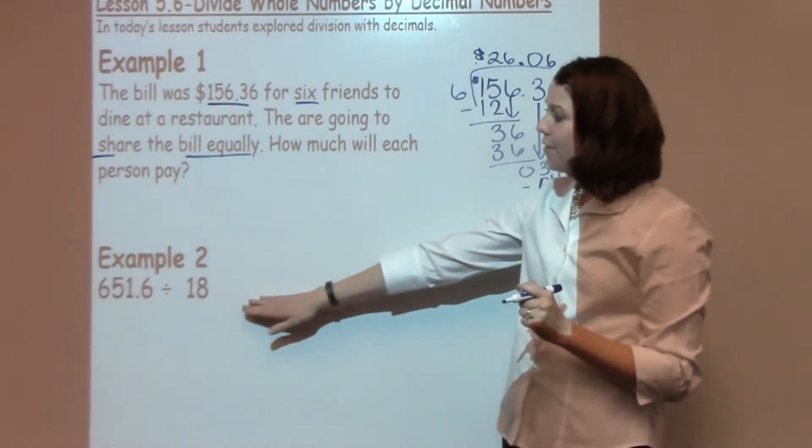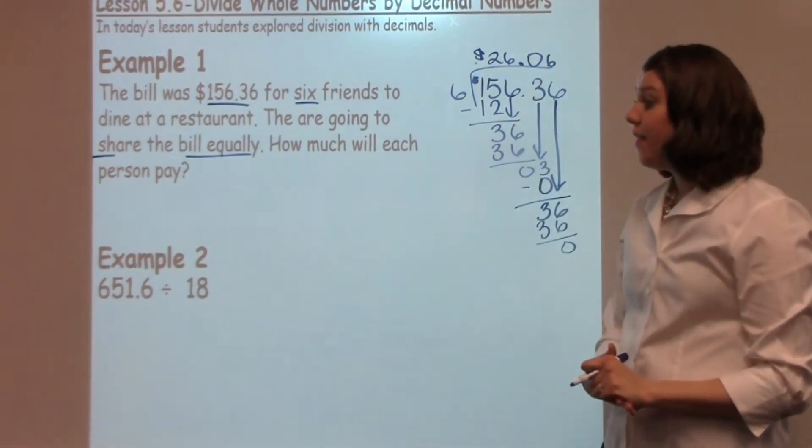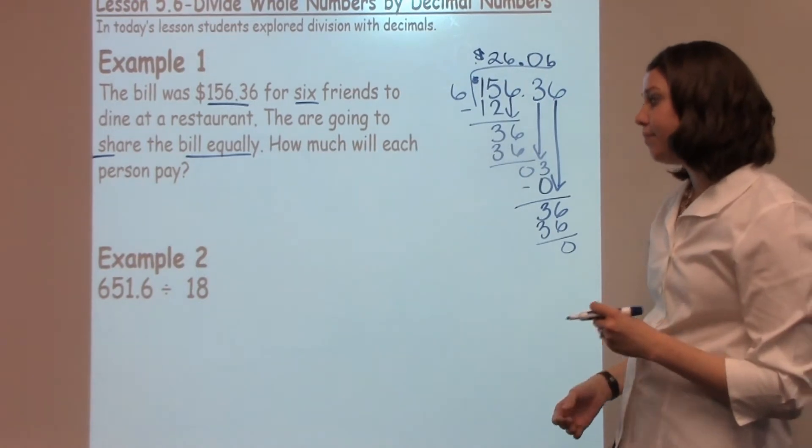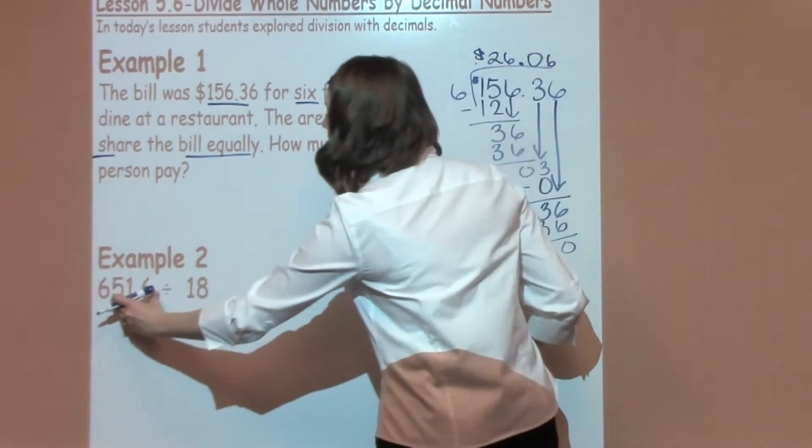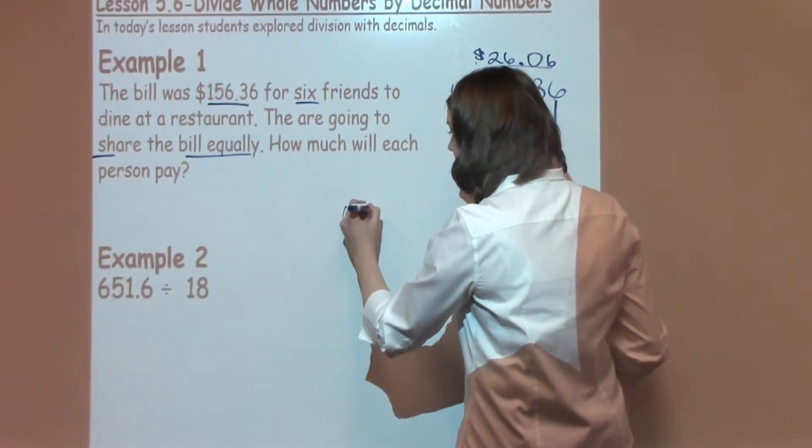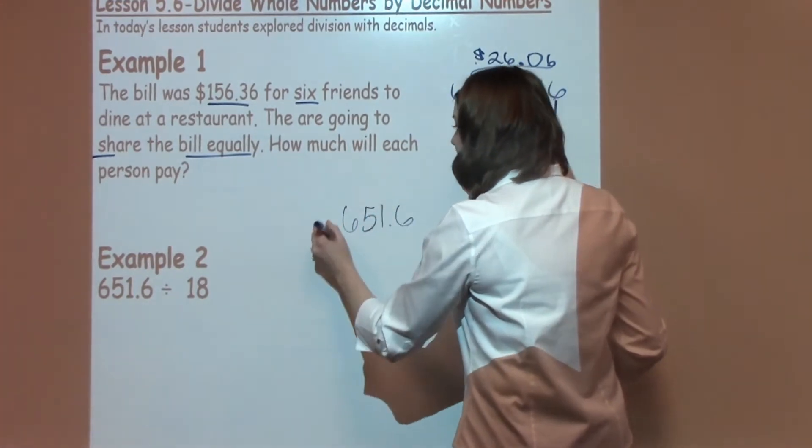For example number two, we have six hundred and fifty-one and six-tenths divided by eighteen. To solve this problem, I'm going to write it down, divided by my eighteen.